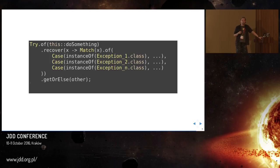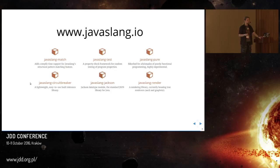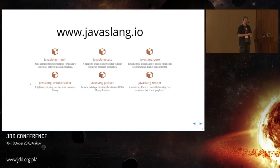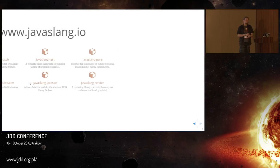One last thing: Javaslang consists of a few different modules. Today we talked about Javaslang Core. We have also Javaslang Match, which contains all necessary tools for preparing your own patterns for pattern matching. There is a property testing framework being developed called Javaslang Test. We have Javaslang Pure, which is very experimental functional programming stuff. We have a circuit breaker fault tolerance library, a Jackson module for all classes available in Javaslang, and Javaslang Render. There is a lot to explore. I hope I managed to encourage you to at least try and have a look at this library. Slides to this talk will be available on my Twitter. Thank you very much.